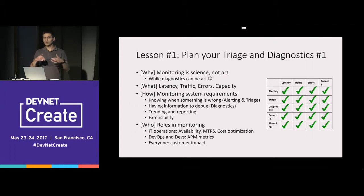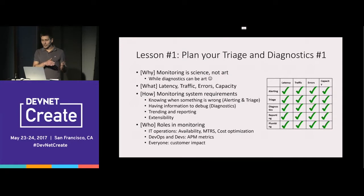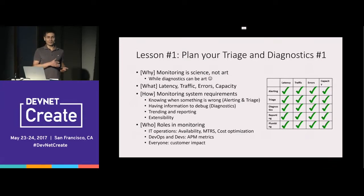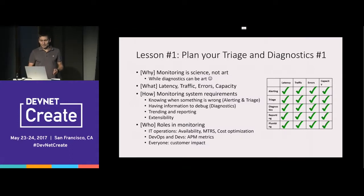When designing your monitoring, take those four signals and look at them from four aspects: alerting, triage, diagnostics, reporting, and plumbing. You have to fill in the answer for each cell in that grid. For every combination — say alerting for errors — there must be a story, even if the conscious decision is that there's nothing there.